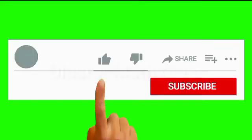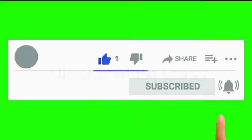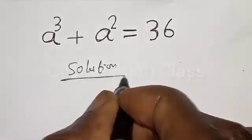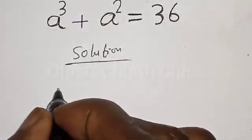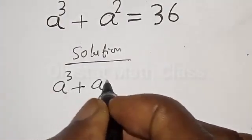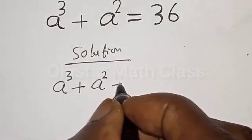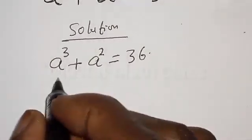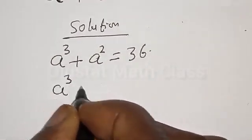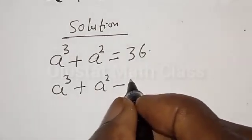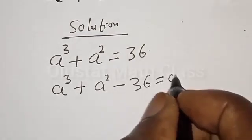But before we proceed, please don't forget to like, share, comment and subscribe. Solution. We have the given equation: a raised to power 3 plus a squared is equal to 36. Then we have a raised to power 3 plus a squared minus 36 is equal to 0.